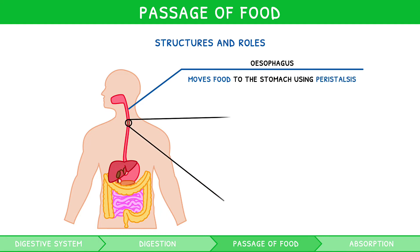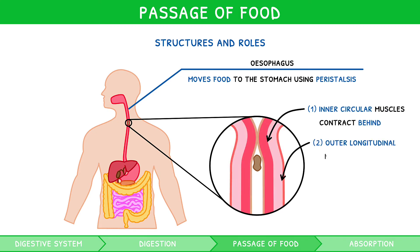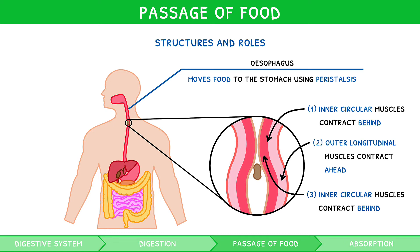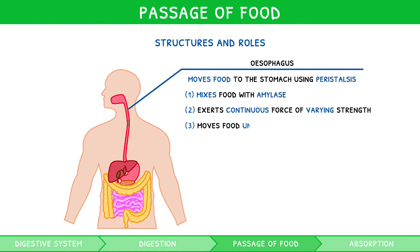During peristalsis, inner circular muscles contract behind the bolus, outer longitudinal muscles contract ahead of the bolus, and inner circular muscles contract behind the bolus, pushing it forwards. Contraction in this way mixes food with salivary amylase and exerts continuous force of varying strength, moving food in a unidirectional manner in what is known as a single peristaltic wave.